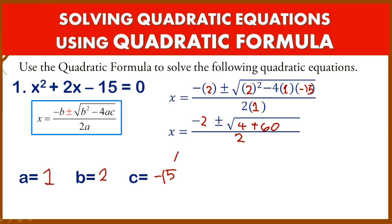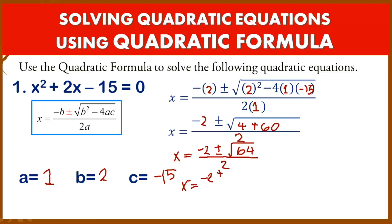Bring down: x = −2 ± √(60 + 4). The square root of 64 is 8. All over 2. So the final equation is x = (−2 ± 8) / 2.